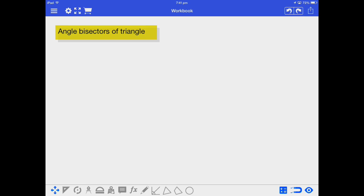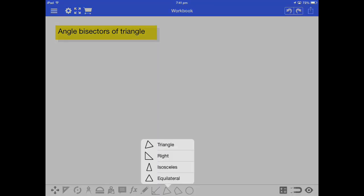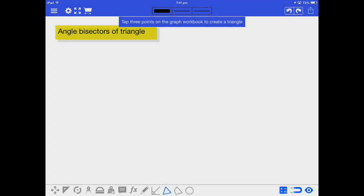Right, we are going to talk about how to find the angle bisectors of a triangle. Now let's simply draw a triangle ABC first.